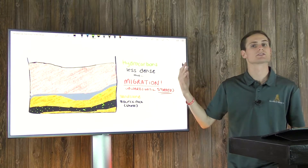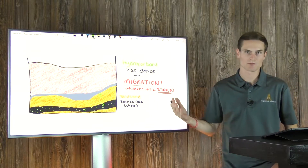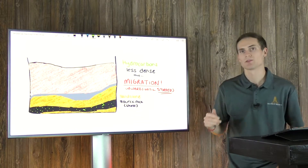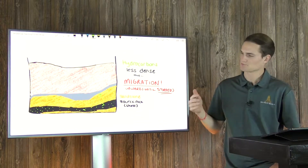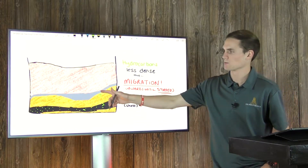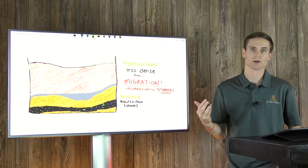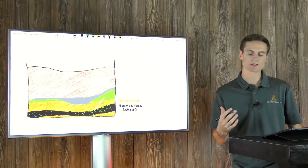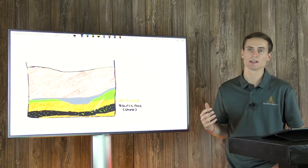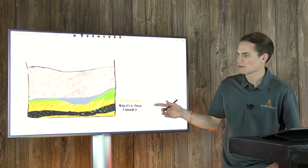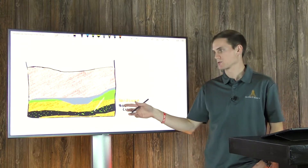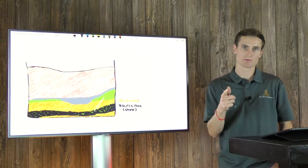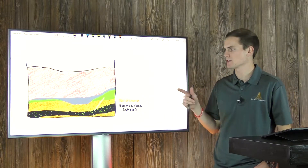If that cap rock wasn't there, the hydrocarbons would just keep going upwards given time. In this case they stop at the confining layer because it's far less permeable. Even though shale is way less permeable than sandstone, you can still have migration through it — especially out of the source rock — and that's how we end up with conventional reservoirs.